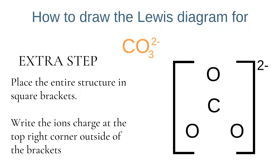We then have our second extra step that isn't present when drawing Lewis diagrams for molecules: we place the entire structure in square brackets. It's important that those brackets are square. We then write the ion's charge at the top right corner outside of the brackets — in this case carbonate has a charge of 2-, so we place 2- in the top right corner just outside those brackets.